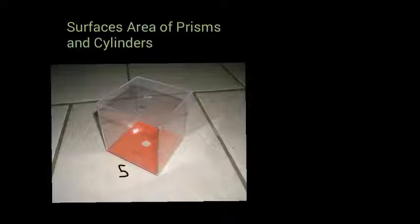So the formula for surface area of a cube equals 6, because there are 6 sides of a cube, and then side squared. So you're going to find the area of each side, and then there are 6 of them, so you're going to multiply it by 6.